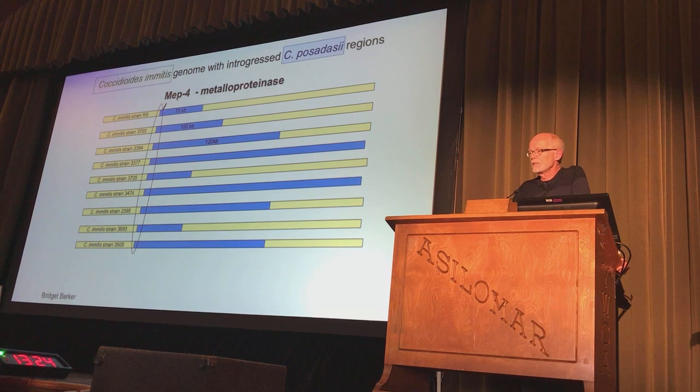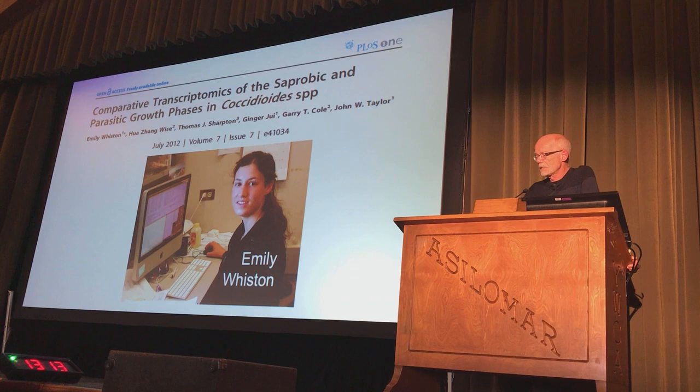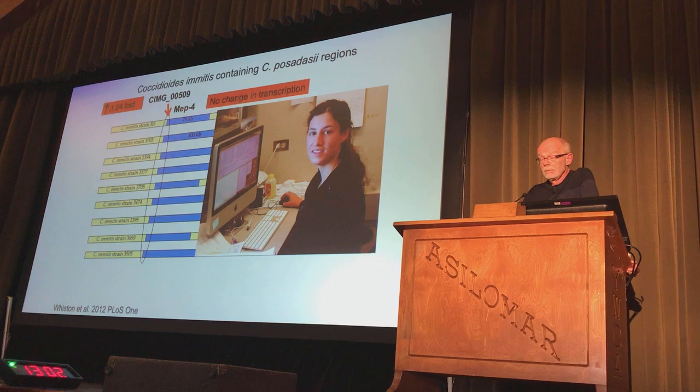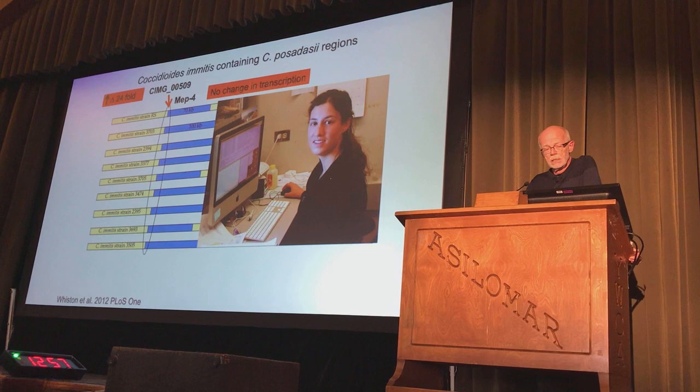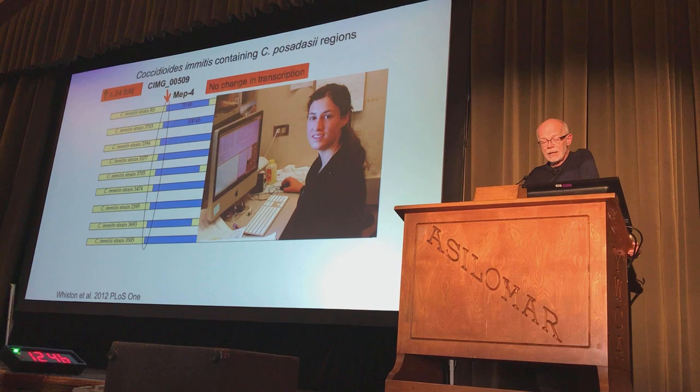Then Emily Whiston came along and did transcription comparisons between the fungus in its environmental phase and its parasitic phase. When she looked at MEP4, there was no change in transcription. She found a 99 amino acid region, not known to be a gene, between MEP4 and the edge of that introgression block, that was up-fold 24 in the parasitic phase. No one's been able to knock it out to see what it really does, because when you knock it out you'll also get MEP4, but I'm hoping someday someone can do that.